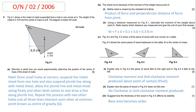We use the plumb line method for finding the center of mass. You can write a complete detail about the plumb line method for six marks. First, mark three small holes in the corners of the lamina. These three small holes should be as far from each other as possible.